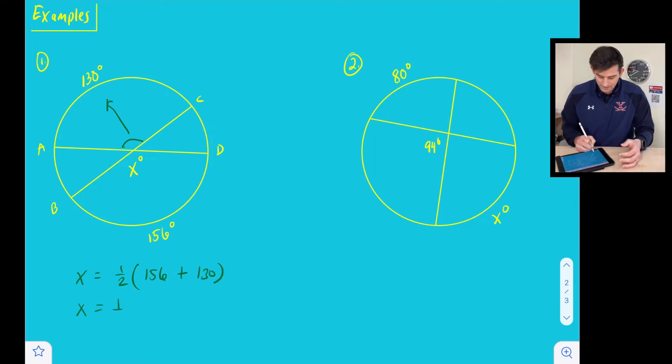So all we have to do is add these together, and we divide by two. So this is going to give us 286, and when we multiply by one half or divide by two, this is going to give us 143 degrees.